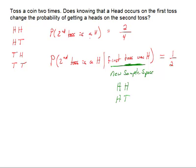And what I see is that these probabilities are the same. And so that tells me that the event that the second toss is a head is independent of the event that the first toss was a head as our given piece of information.